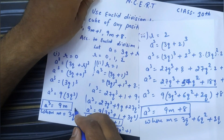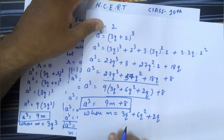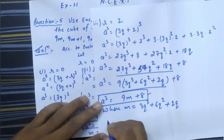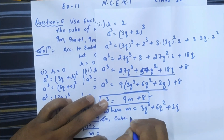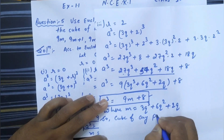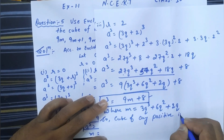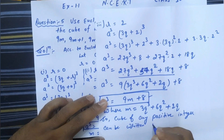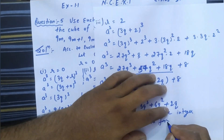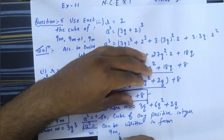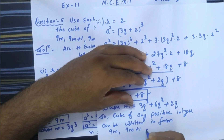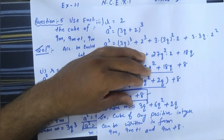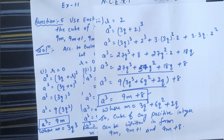So we have seen that the cube of any positive integer is of the form 9m, 9m+1, and 9m+8. Hence proved. Thanks to all students — please let us know how you liked this video in the comment section. Goodbye, have a nice day!